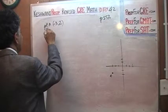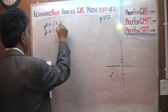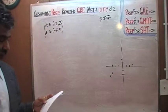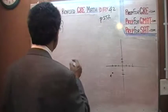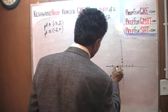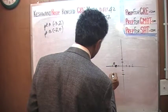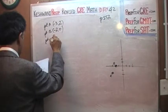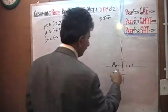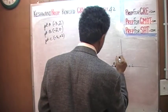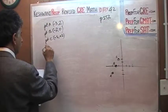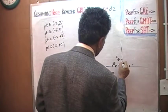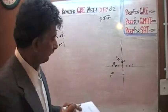Then we have point B, which is negative 2 and 0. This is necessary work in order for you to understand the question that is going to follow. Negative 2 and 0 — right on the x-axis. There is your point B. Then we have point C, which is negative 1 and a positive 2. Negative 1 and positive 2 is right about here — that is C.